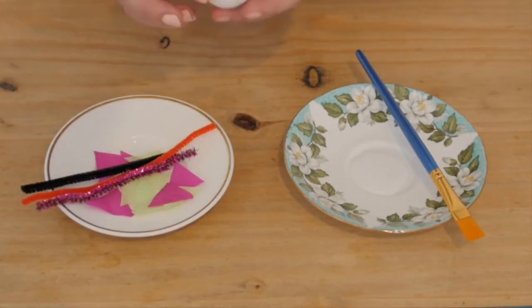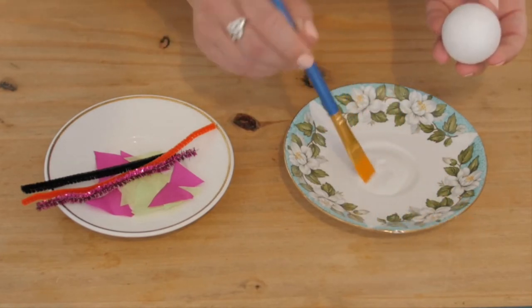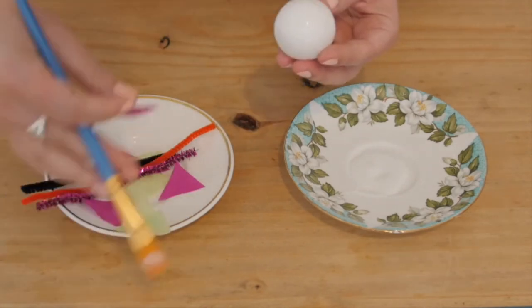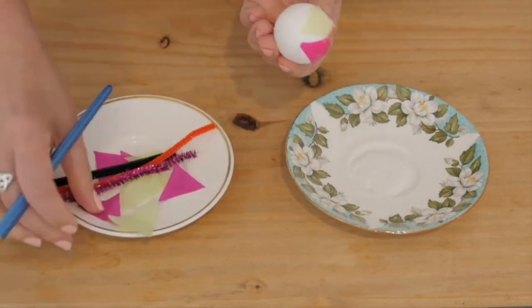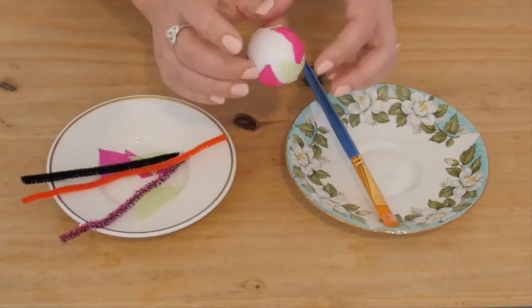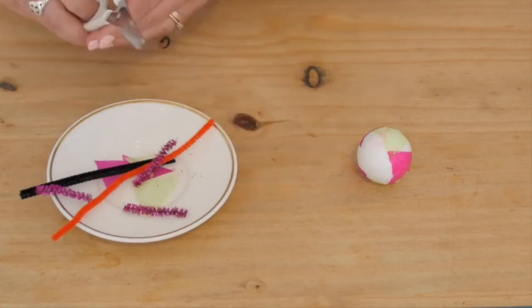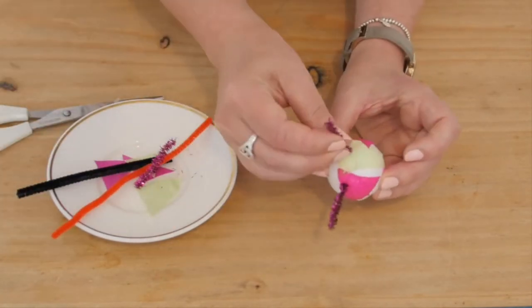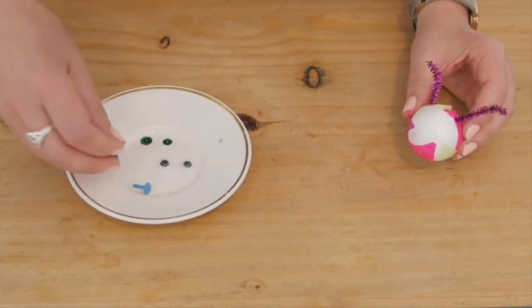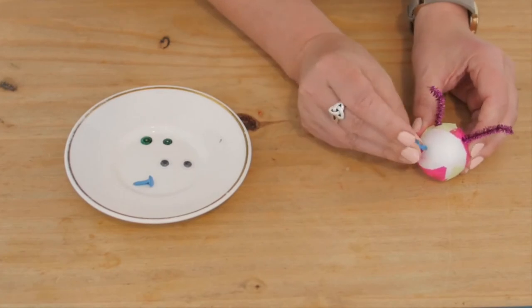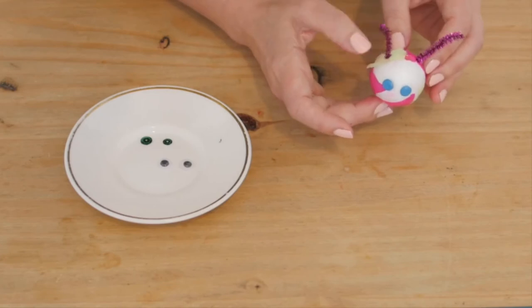So this is my favourite bit, decorating the head and you can be really free with this and any decorations that you feel like putting on you can. So I am using PVA glue and some tissue paper. The next thing I am going to do is to make some antennae. And now for the eyes. If you are using split pins they can just stick straight in where you think the eyes might go.